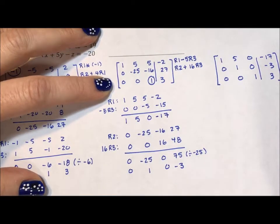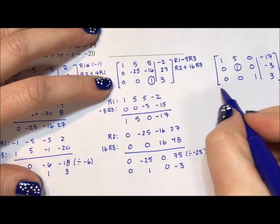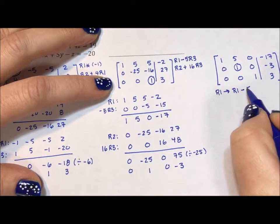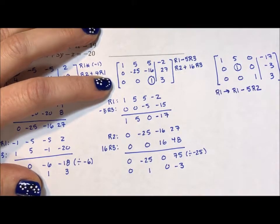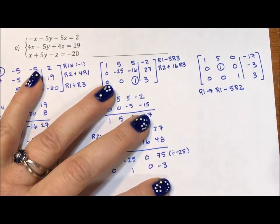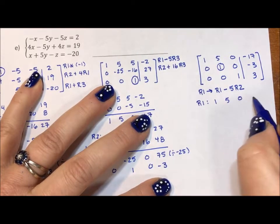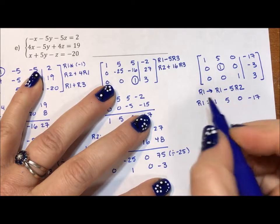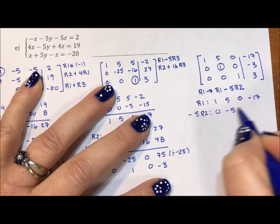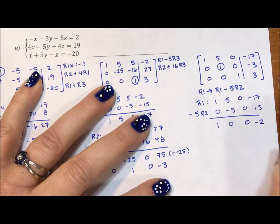I feel we are almost done with this. I now pivot on this. I'm going to replace row 1 with row 1 minus 5 times row 2. So row 1 is 1, 5, 0, -17. Negative 5 times row 2 is 0, -5, 0, 15. So I get 1, 0, 0, -2.